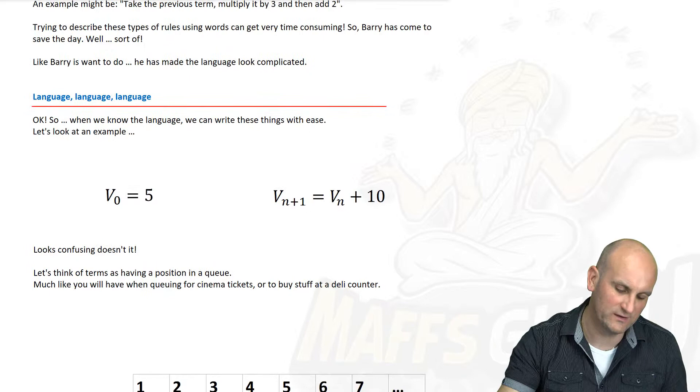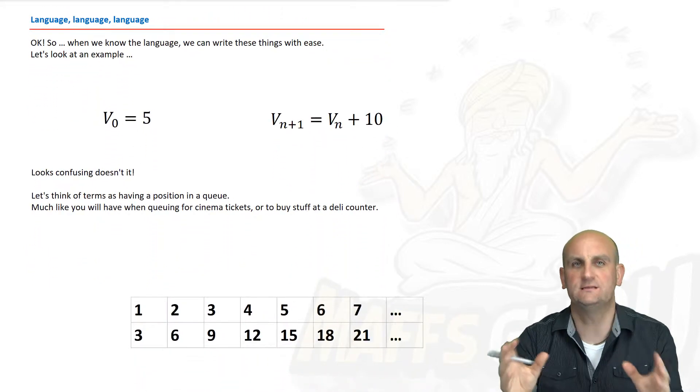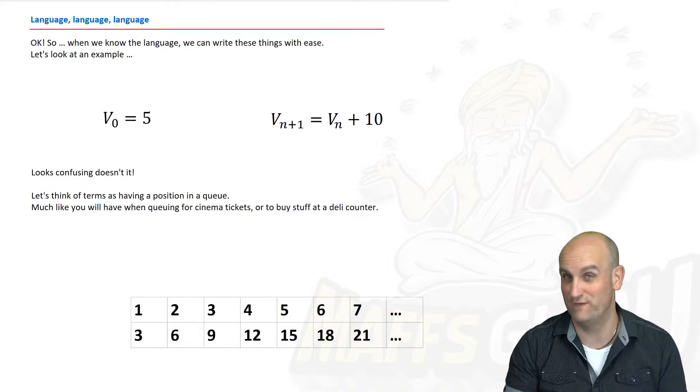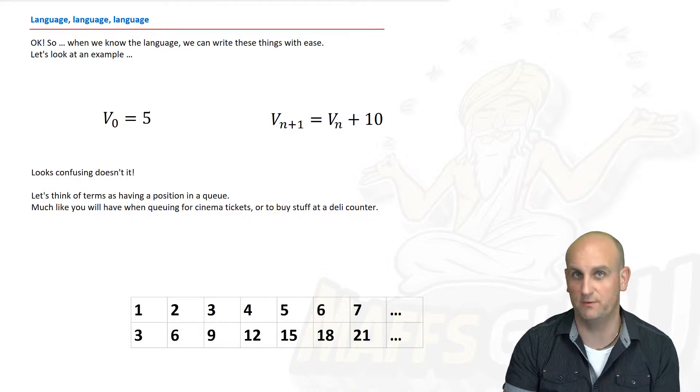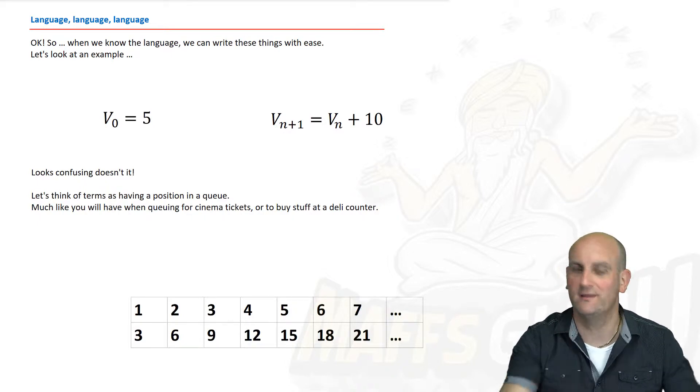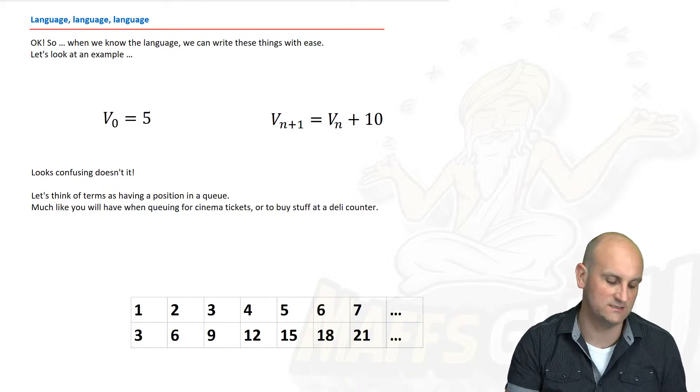Now, as I say, Barry sort of come to save the day. How has he come to save the day? Well, writing things in terms of English language can get very long and very boring and very repetitive. So if we can make things simpler for us, then life is good. But Barry being Barry, gives with one hand and takes away from another. So if we have a look at the language he uses, here we go.